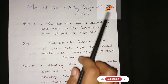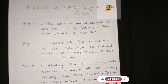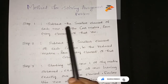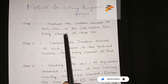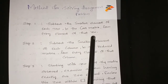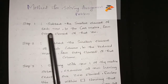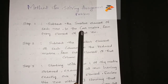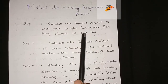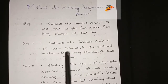Method for solving the assignment problem. Step 1: Subtract the smallest element of each row in the cost matrix from every element of that row. This is done row-wise.